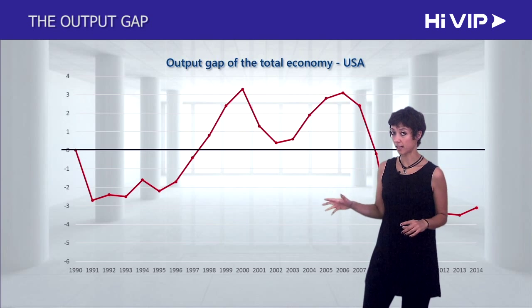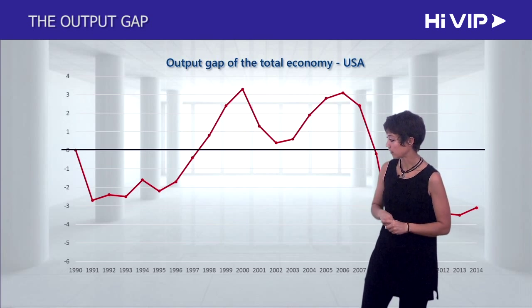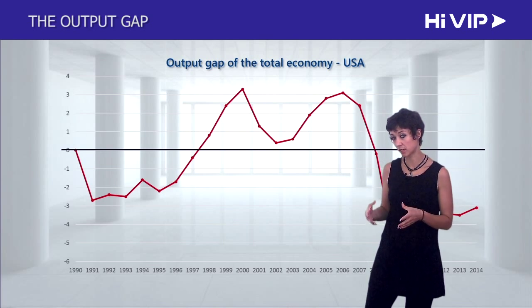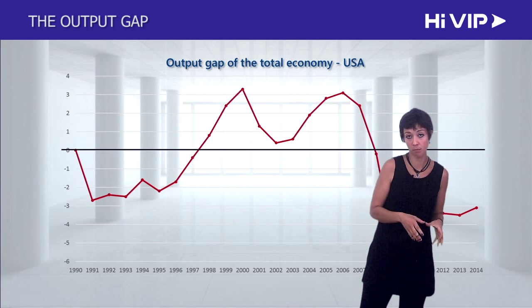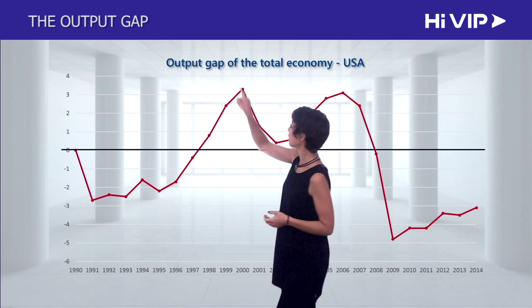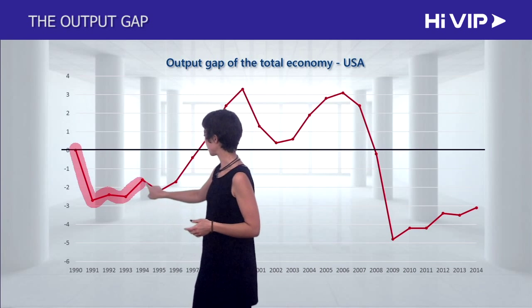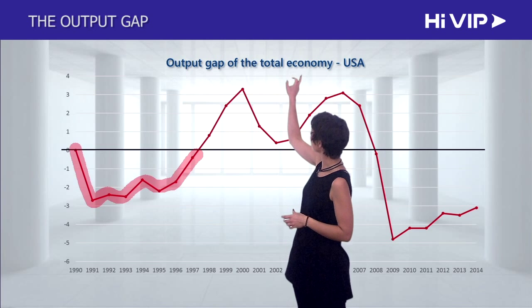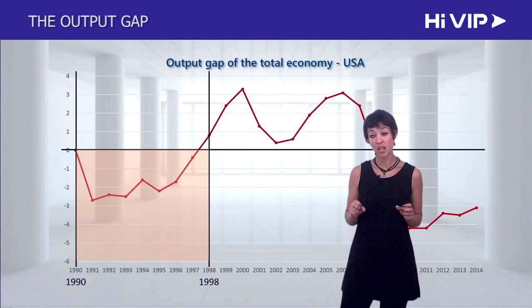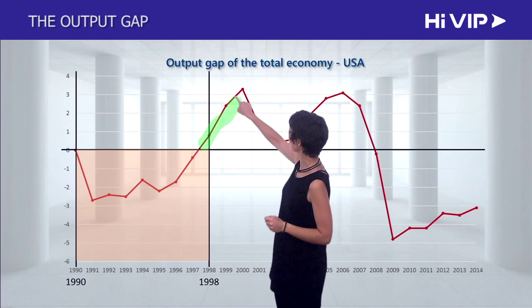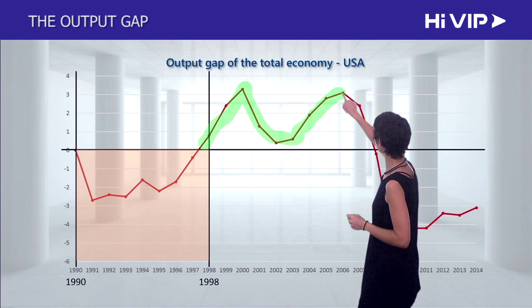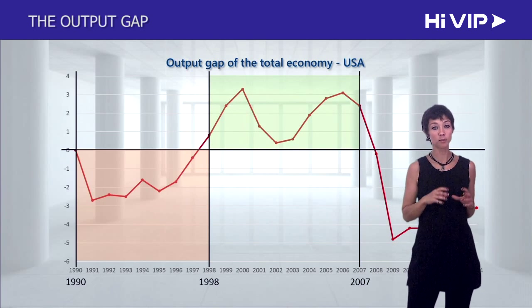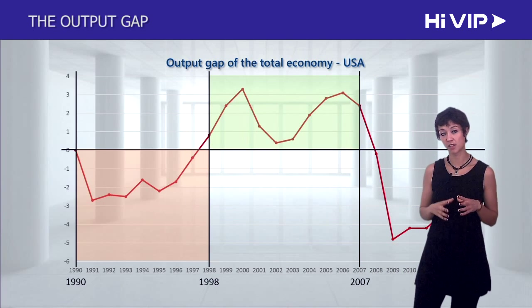This is the United States over quite a long period, starting in 1990. Positive numbers mean growing too fast — a positive output gap — and negative numbers mean a negative output gap. You can see that the US economy was growing too slow for a very long period from the early 90s to the late 90s, so there's a negative output gap. Then it moves into positive numbers about the end of the 90s, going all the way until the financial crisis — a long period of positive output gap, the economy growing faster than it actually should have.